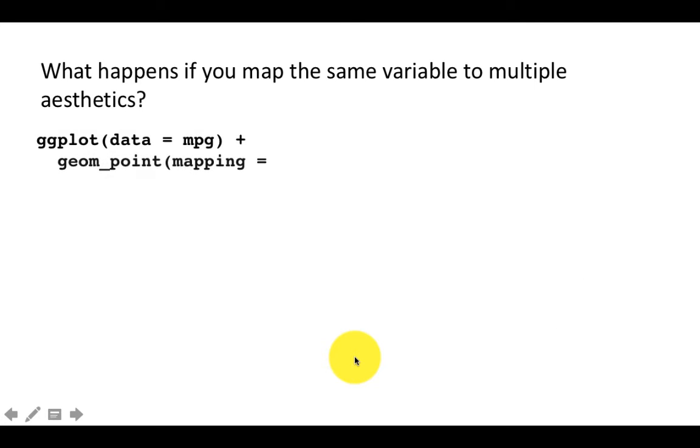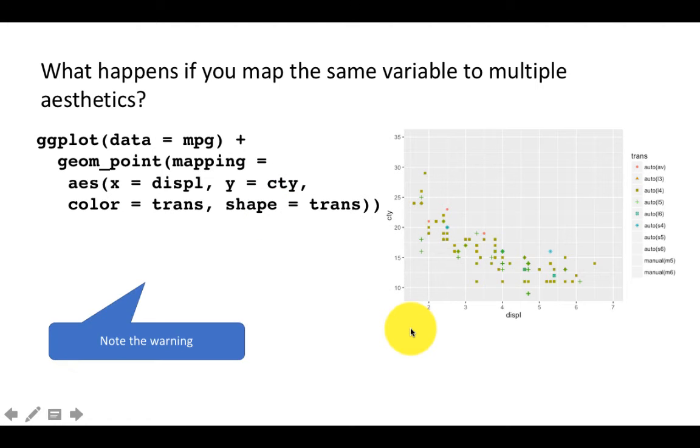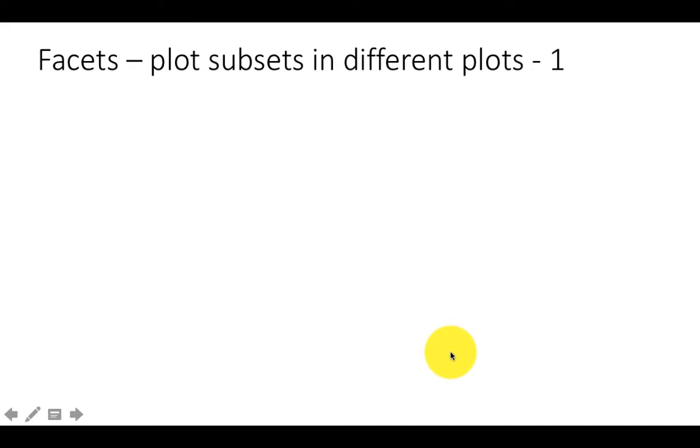Another example: color equals trans, shape equals trans - trans being transmission. This will work fine, but it'll generate a warning because transmission has many more than six options and we already know that shape only has six possible shapes that work. You'll have to play around and adjust some of these things.